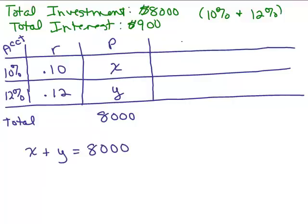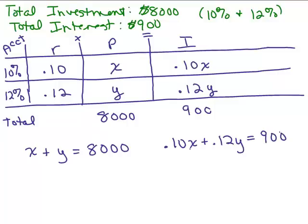Now what about the interest earned in each account? I know the rate times the principal equals the interest earned. So the interest in the first account is simply 0.10X. And the interest in the other account is simply 0.12Y. But I know what the interest adds up to. The total interest is $900. That will give me my second equation. The amount of interest I earn in one account plus the amount of interest I earn in the other account is a total of $900. So 0.10X plus 0.12Y equals 900.